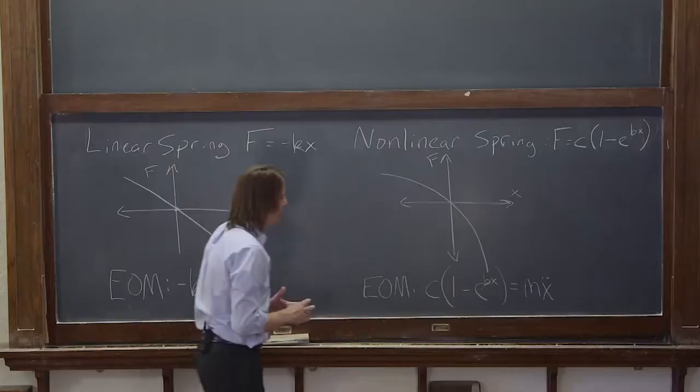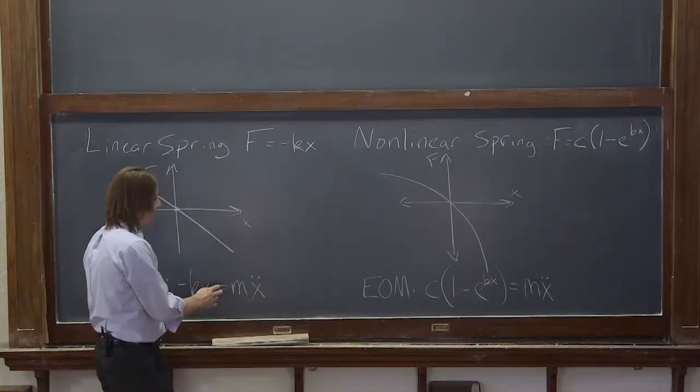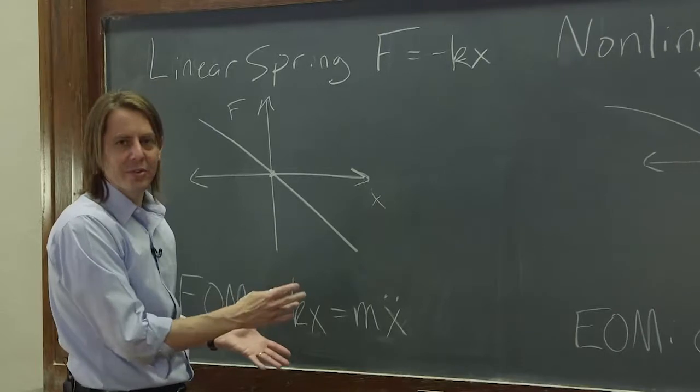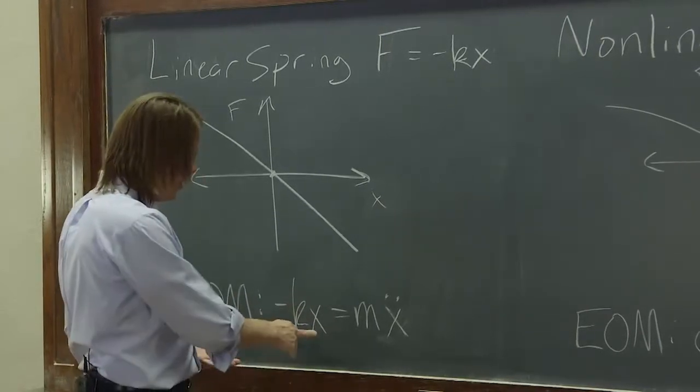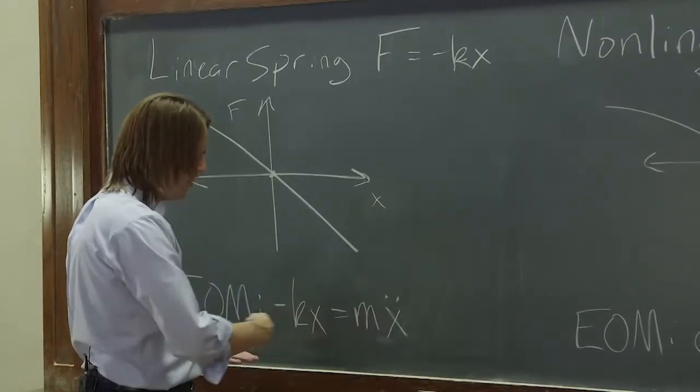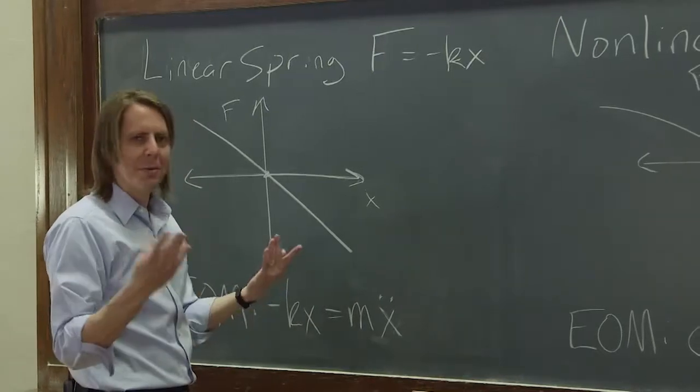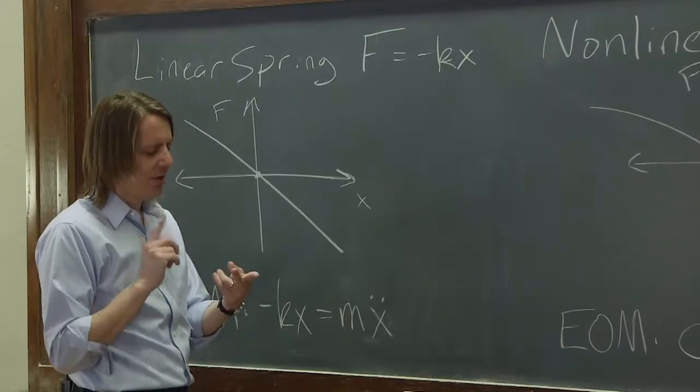This is really important because a linear equation of motion, we already solved because you just guess. So what function is equal to its own second derivative within a constant or two? Well, we came up with four of them: sine, cosine, e to the x, and zero.